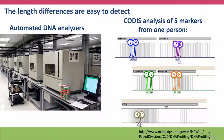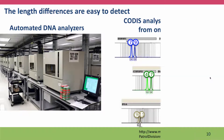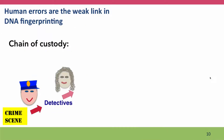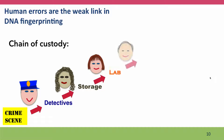At this locus they have a four-repeat allele and a seven-repeat allele. These automated analyses are very accurate and very reliable.